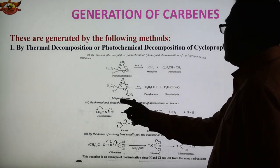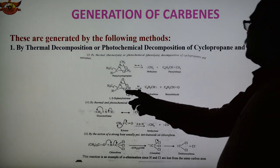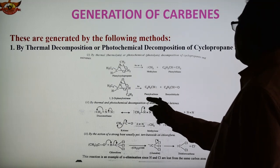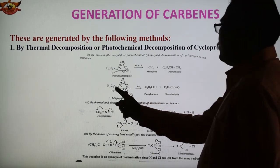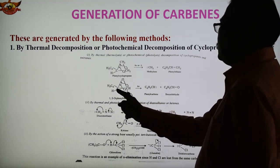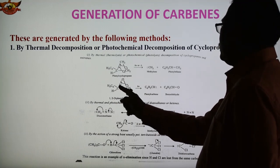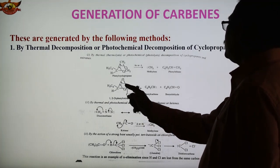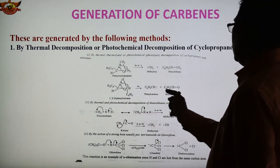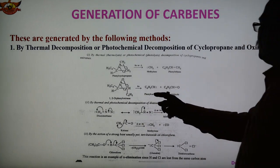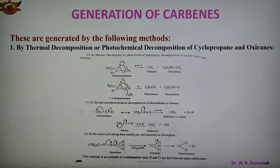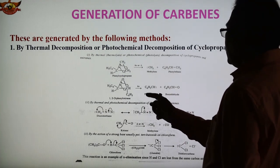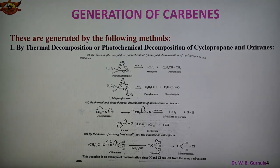Another example is 1,2-diphenyl oxirene. When this compound is exposed to sunlight, the bond breaks to give C6H5–CH with 2 electrons (phenyl carbene) and C6H5CHO (benzaldehyde). So methylene is the parent species, and this derivative is known as phenyl carbene.